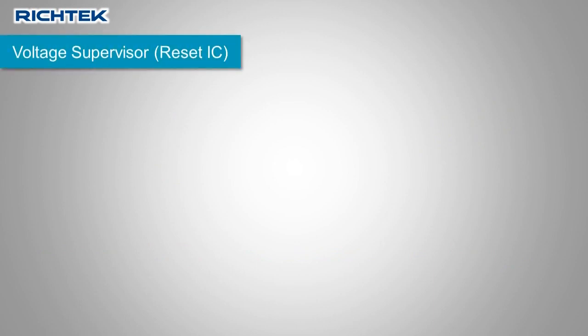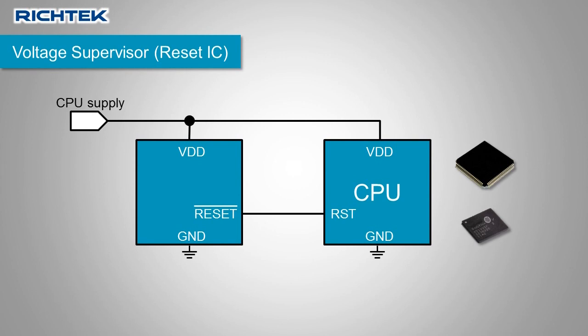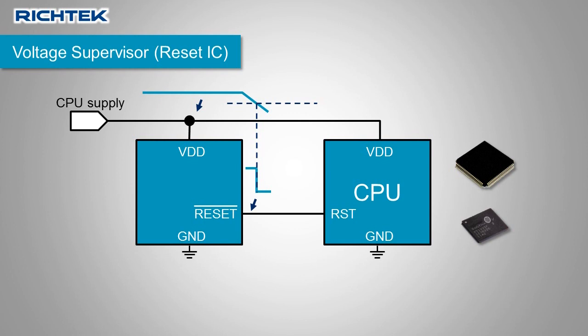Voltage supervisor ICs or reset ICs are used to monitor the supply line of microcontrollers or processors. When the supply voltage drops below a certain level, the voltage supervisor IC will initiate a reset to the processor to avoid data corruption due to too low processor supply voltage. When the supply voltage recovers, the reset signal is removed, usually with some delay to ensure stable processor initialization.